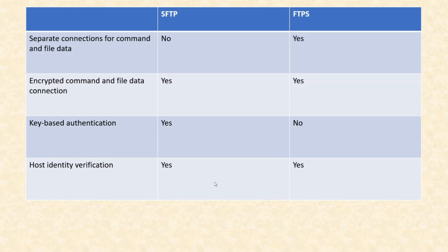Now let's discuss some comparison points. Separate connections for commands and file data: in SFTP this is not possible, but in FTPS it is possible. Second, encrypted command and file data connection: both SFTP and FTPS encrypt command and file data. Third, key-based authentication: SFTP supports key-based authentication, while FTPS does not. Both SFTP and FTPS support host identity verification.